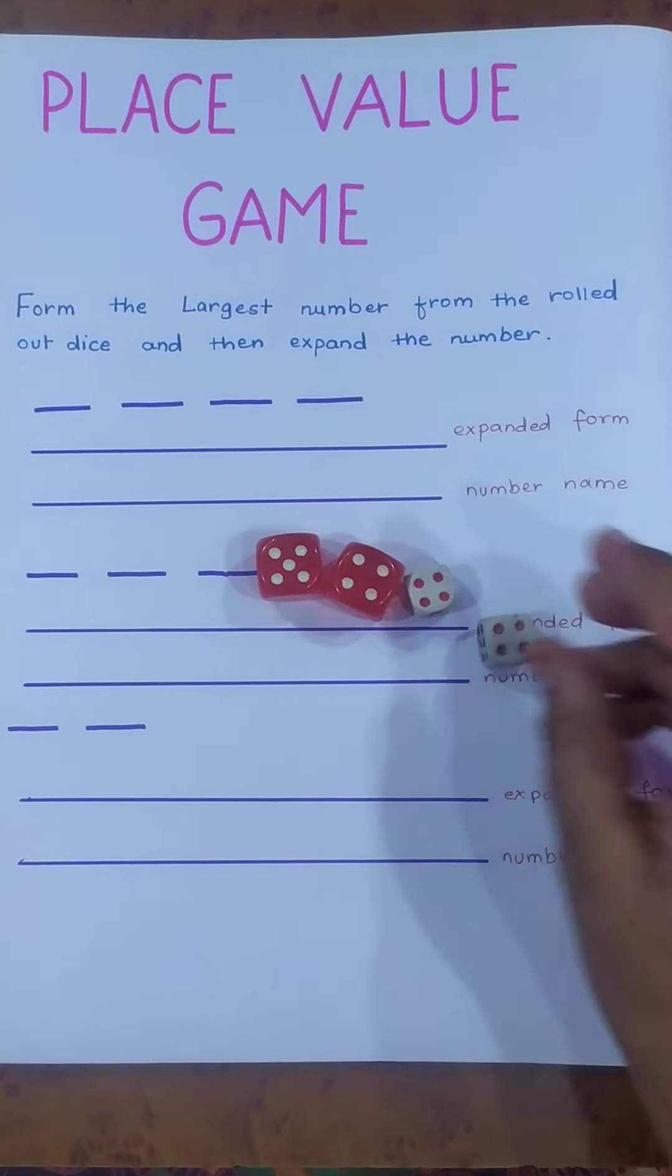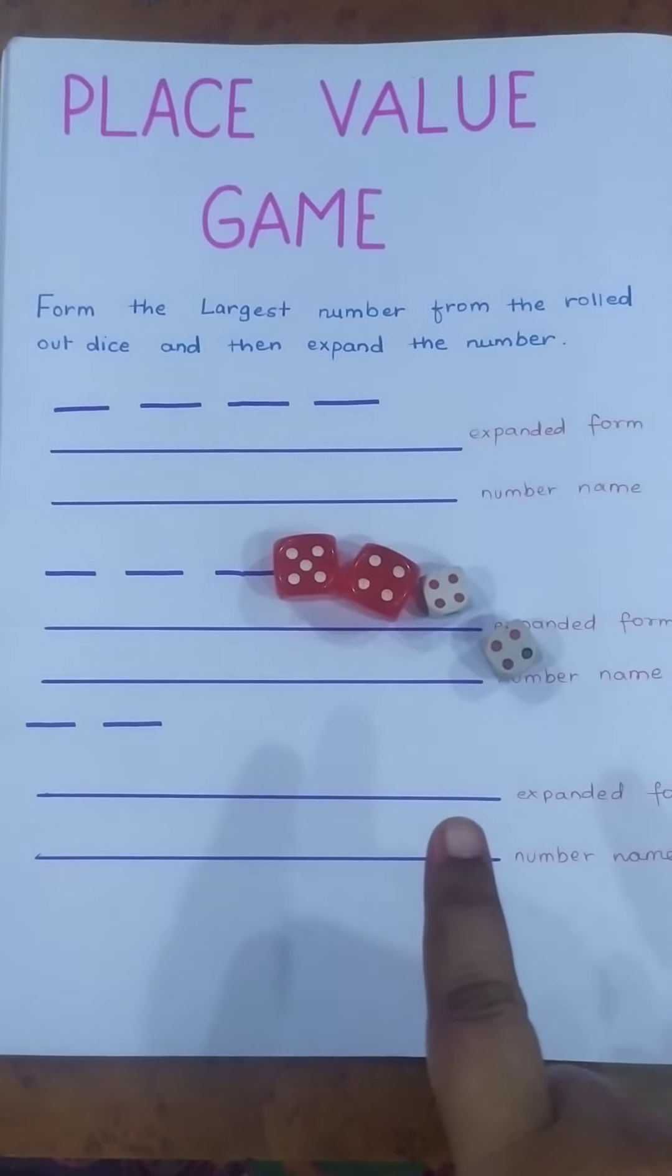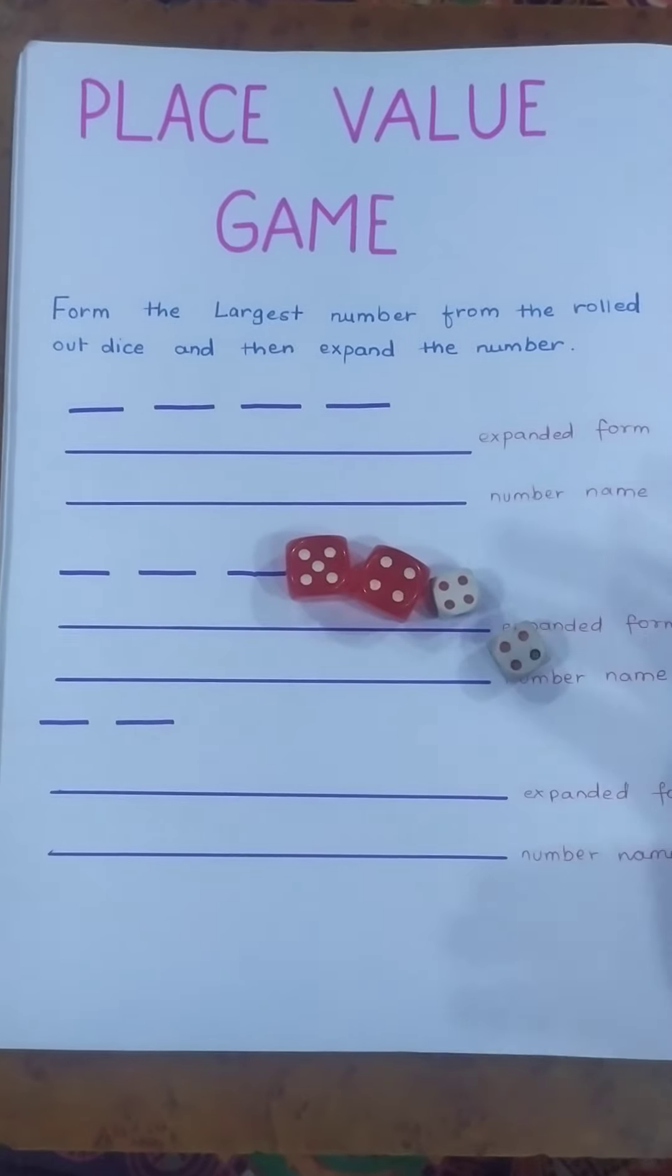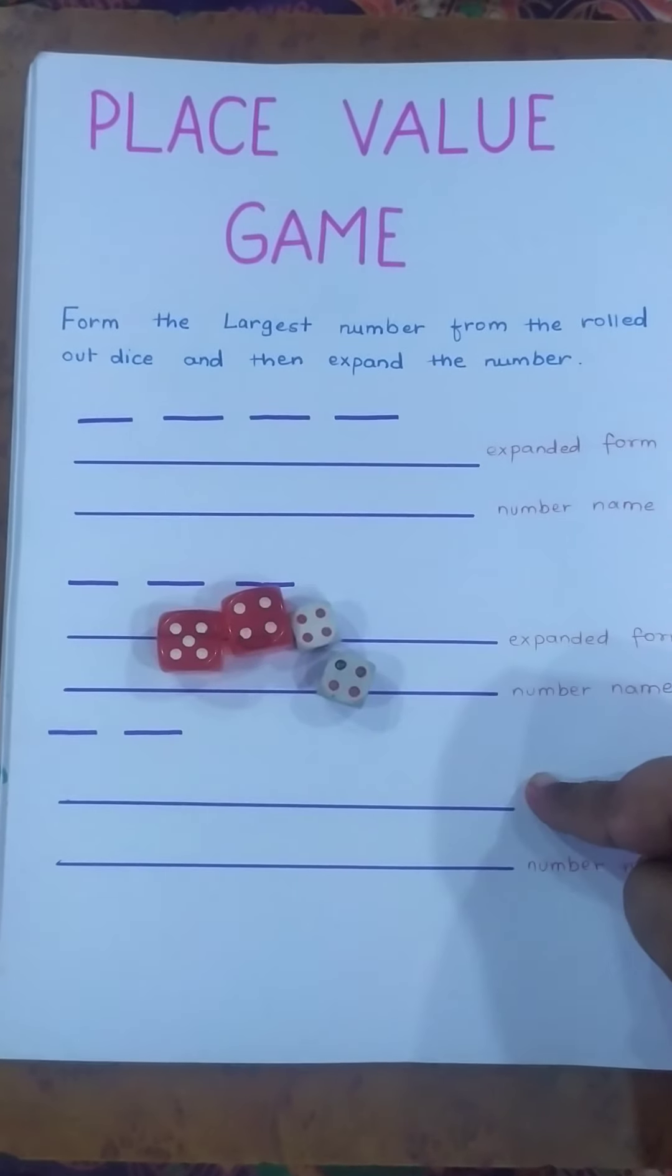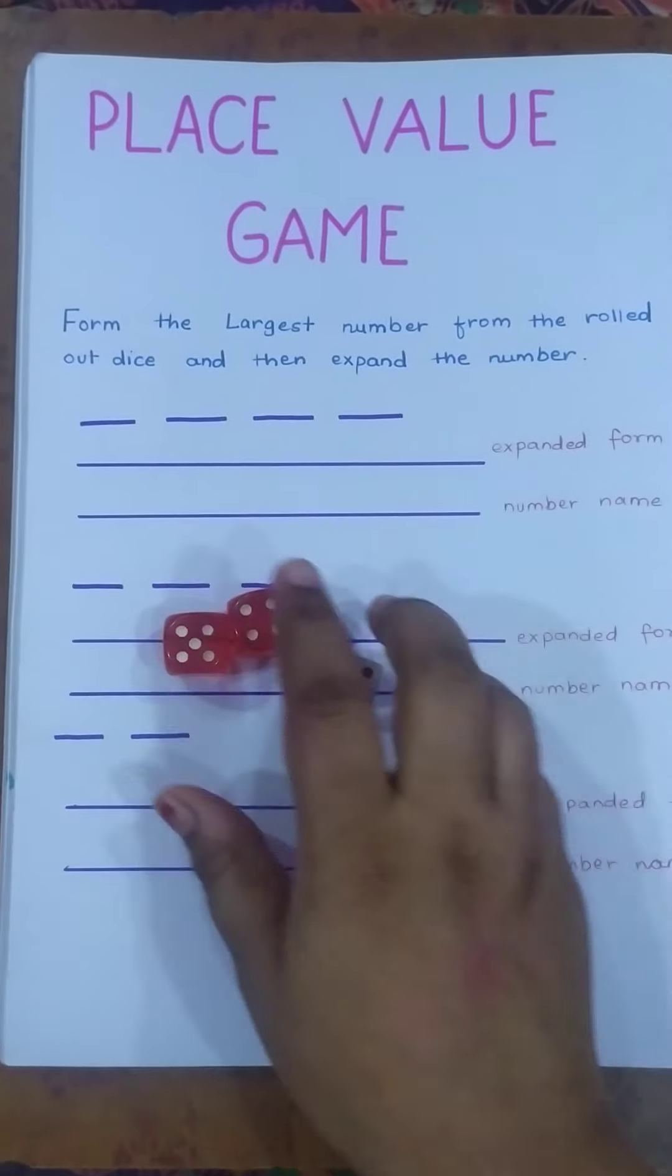For class three you will be needing four dice for four-digit numbers, and so on. You can increase the dice according to your child's standard.